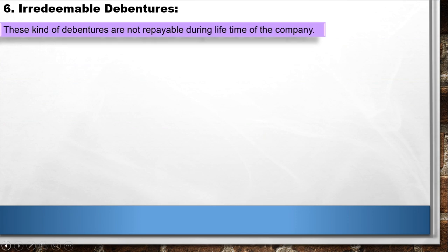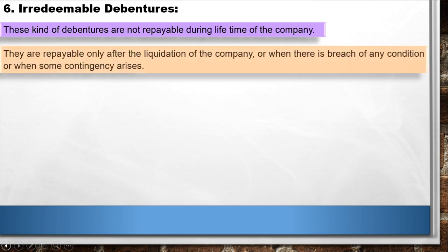6. Irredeemable Debentures: These kinds of debentures are not repayable during the lifetime of the company. They are repayable only after the liquidation of the company, or when there is a breach of any condition, or when some contingency arises.